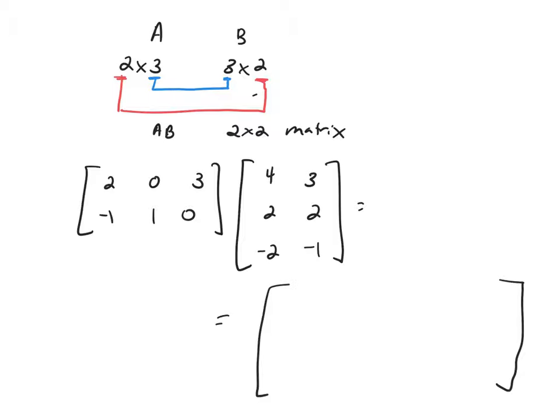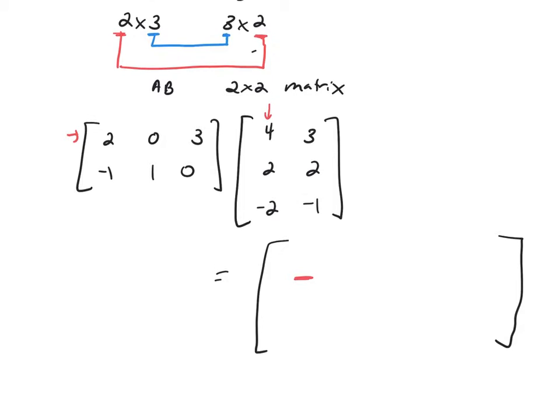So I'm going to multiply. To get this first entry here, you're going to take the first row of A and the first column of B and multiply those together. Multiply the corresponding entries. So you would get 2 times 4, 0 times 2, and 3 times negative 2. And that will be the first entry in your 2 by 2 matrix.